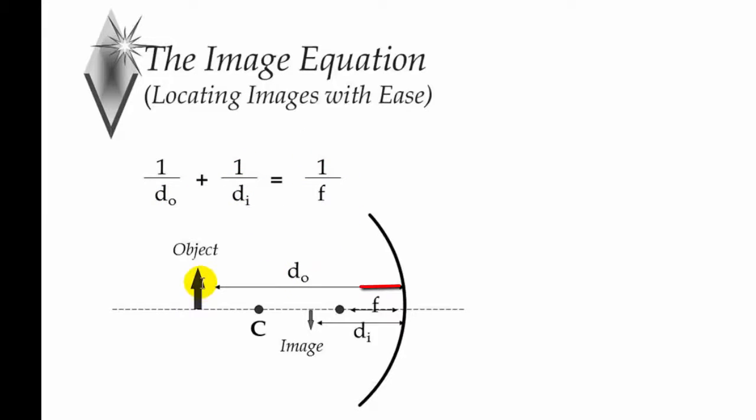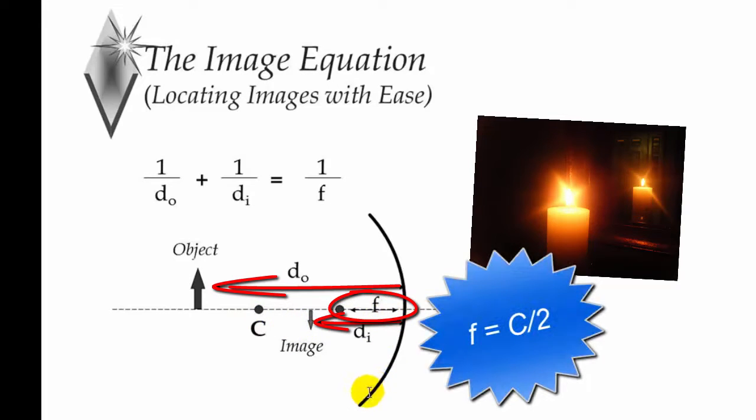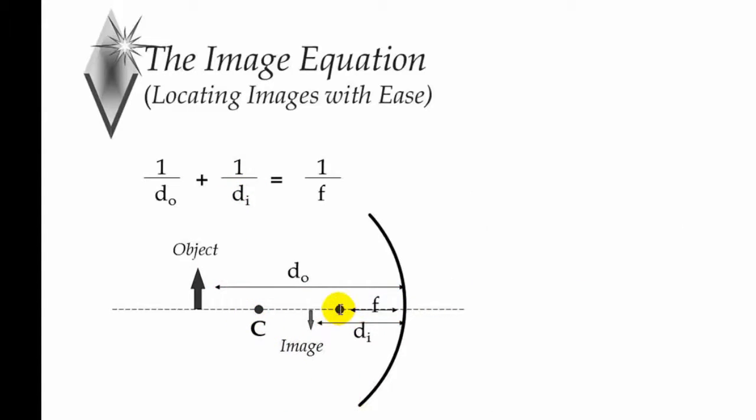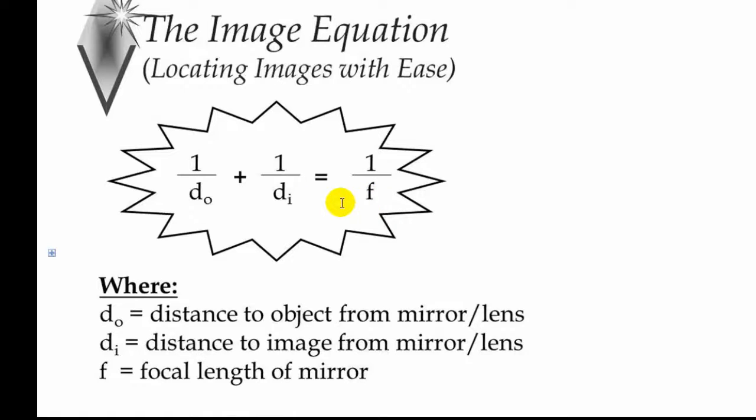Where DO is the distance of the object to the mirror. DI is the distance of the image to the mirror. And F is a focal length, which is the center of curvature divided by 2. So if the center of curvature of the mirror was 100 centimeters, then half that would be 50 centimeters for the focal length. So once we substitute in our values, we can then simply calculate exactly where any image is formed. So pretty much in a nutshell, that's the image equation. It's just plug and chug.